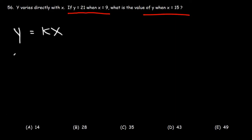So we know that y is 21 when x is 9. So to solve for k, we need to divide both sides by 9. So k is 21 over 9.